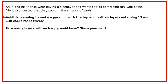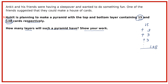Now the second question, which carries two marks: Ankit is planning to make a pyramid with the top and bottom layers containing 15 and 138 cards respectively. How many layers will such a pyramid have? So the first term a is equal to 15, the common difference d is 3, and the nth term is 138. We have to find n, which is the number of layers.